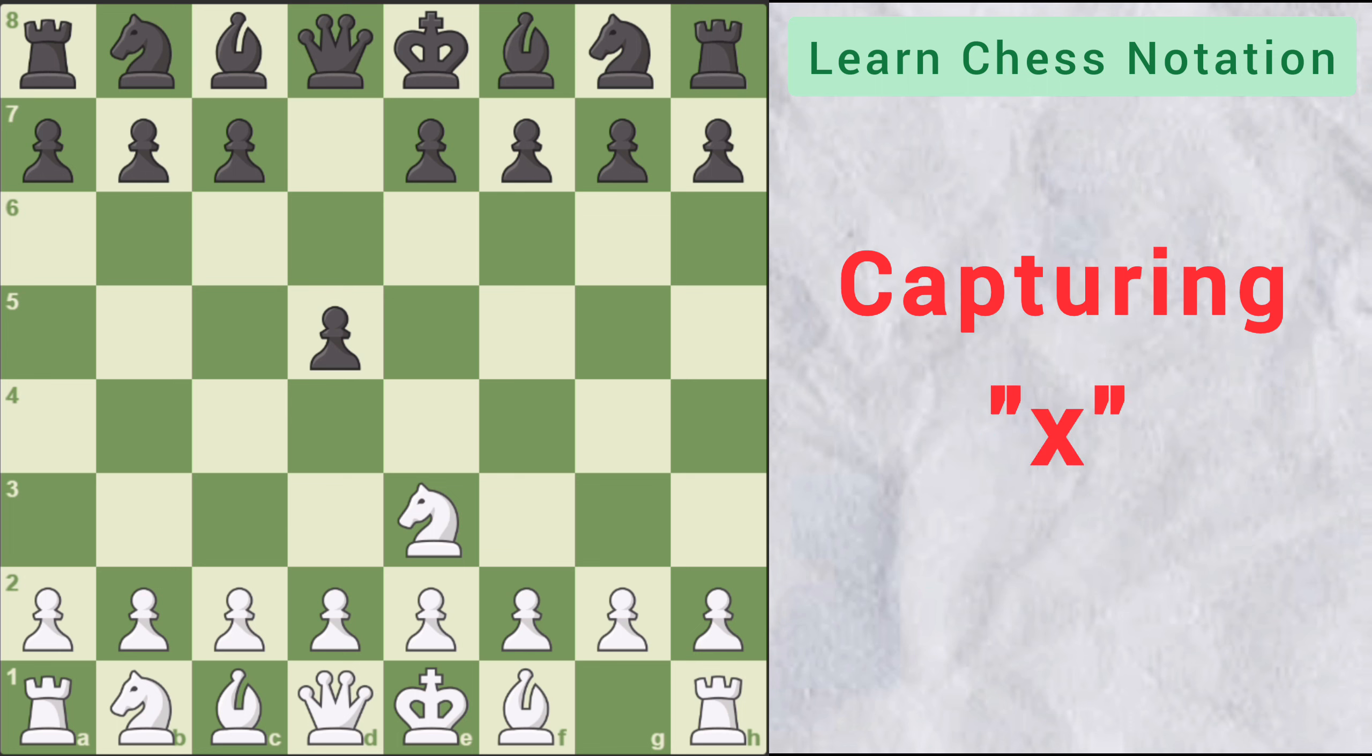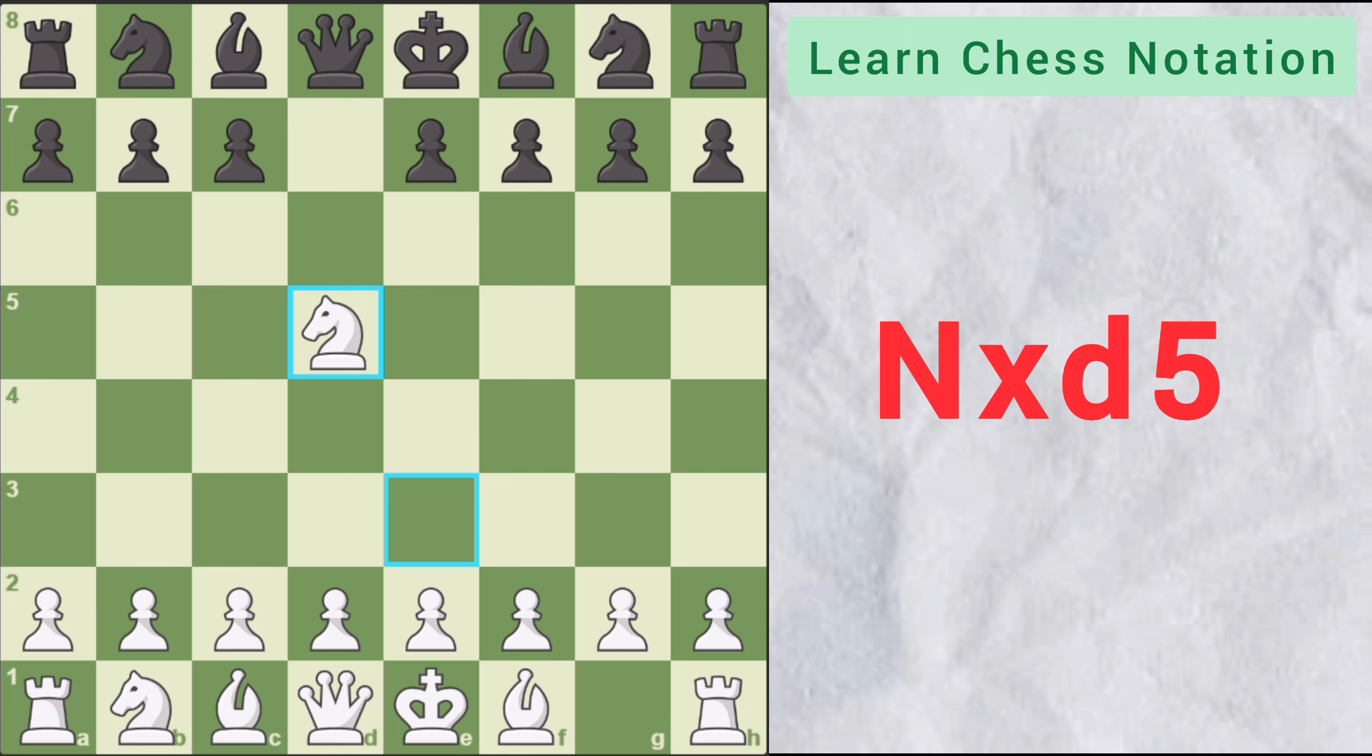To show a piece capture, a symbol like small x is used between the notation of piece and the name of square. For example, if this knight captured the pawn on D5 square, then it will be written as capital N for Knight followed by a small x for capture and at last the name of the square that is D5.